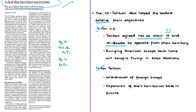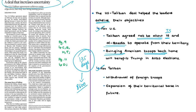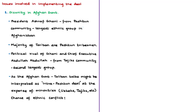This troop withdrawal realizes the current US president's long-standing wish, and the return of American forces well before the 2020 presidential election will boost his re-election chances. The deal also helps the Taliban achieve its primary objective of removing foreign troops within a reasonable timeframe, which will help the Taliban expand its territorial base at the expense of the weak Afghan government. In these ways, the deal benefits both the US and the Taliban.